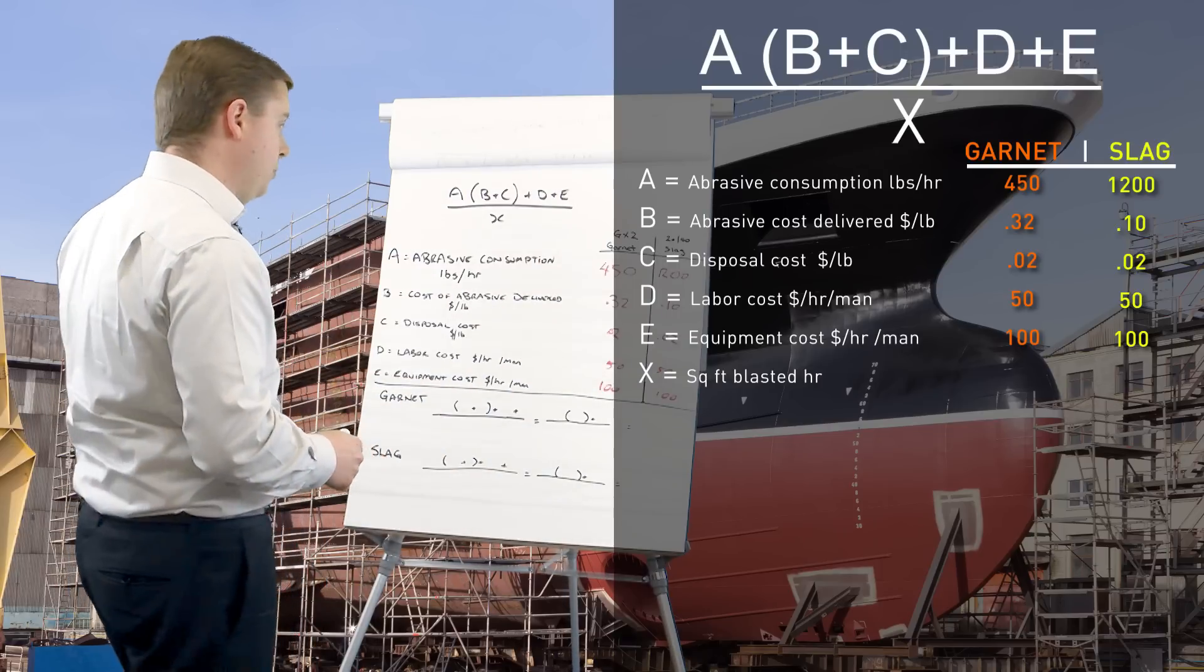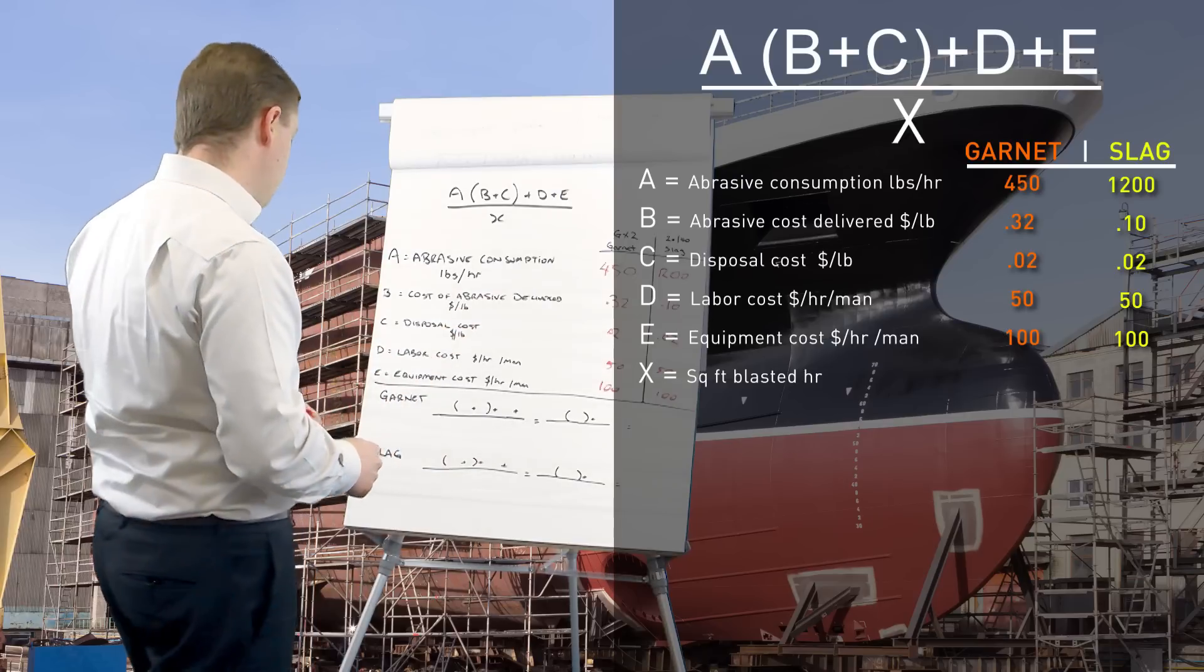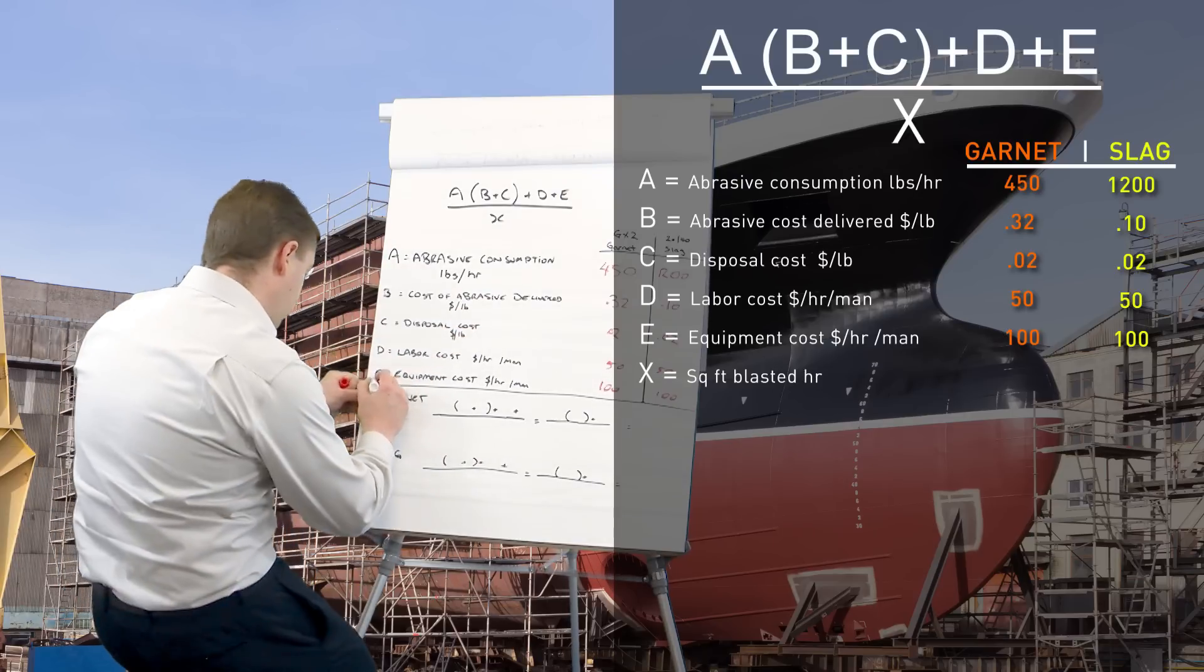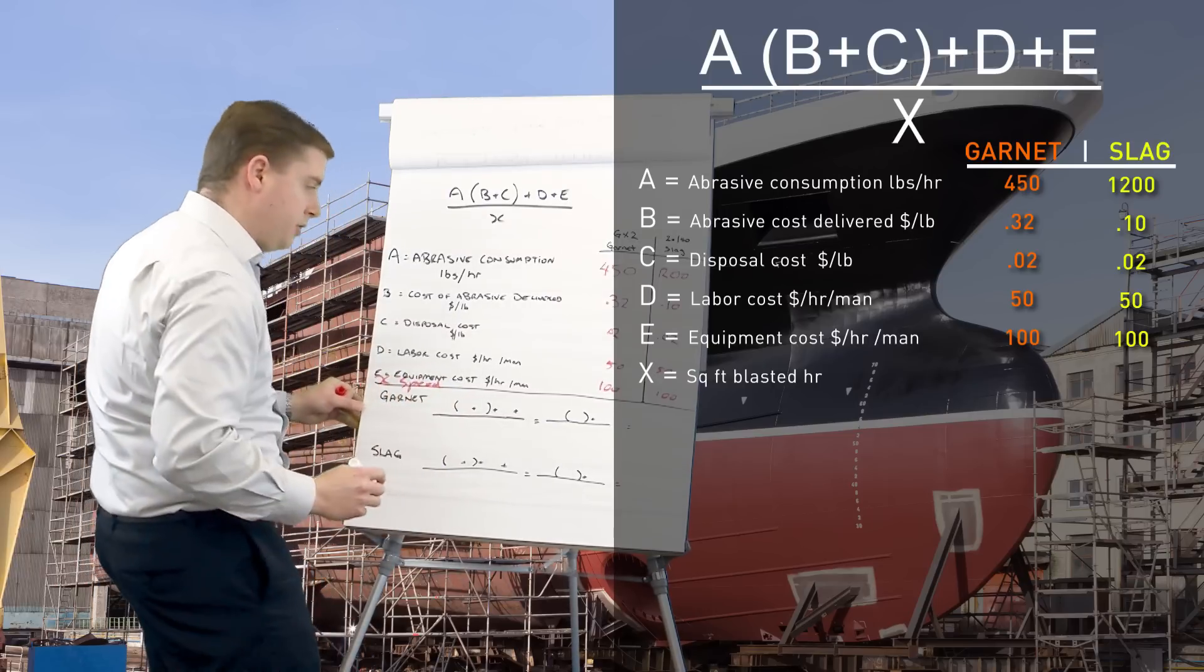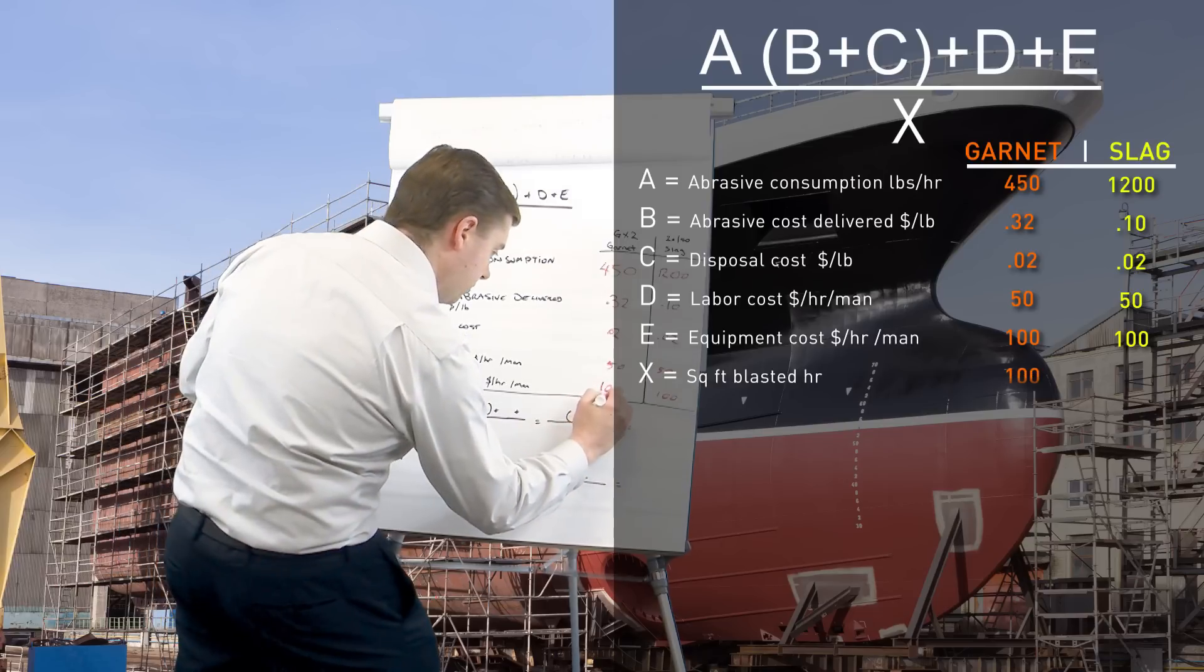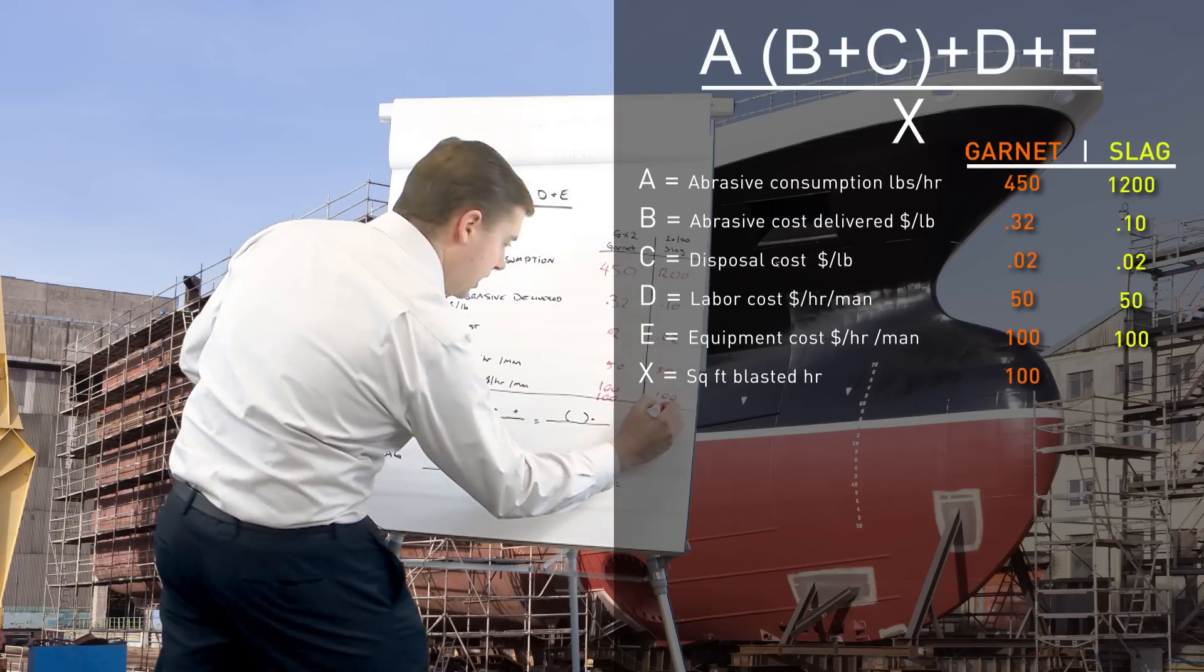Alright, if we put these numbers into the formula, the only one missing here is X. I forgot to write it up before. So X is our speed. So that with the garnet, we were achieving 100 square foot an hour and with the slag we're getting 80. So about 20% faster blast.